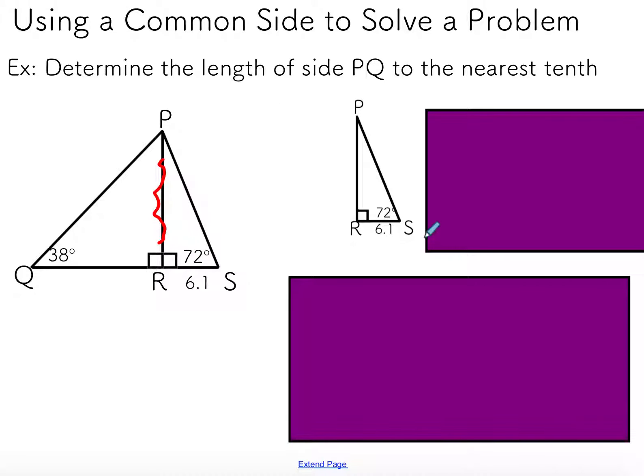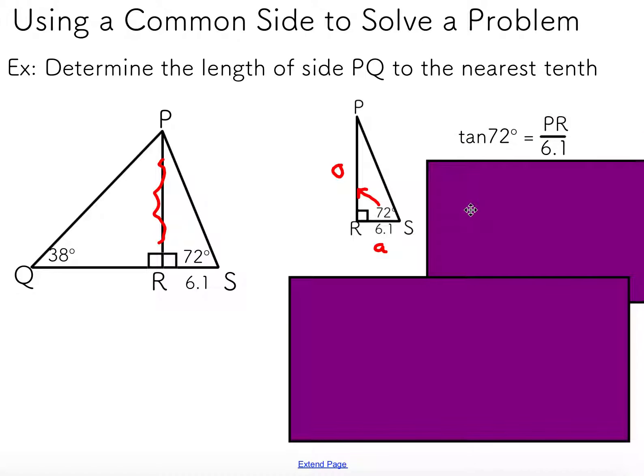If I take a look at that angle, I'm interested in the opposite side. That's my shared side. And I have what's called the adjacent side, the side next to my angle. I don't have my hypotenuse, but it's not really important for this problem. What I have here is the opposite and the adjacent. I want to use the tan ratio. I can write this as PR over 6.1, the opposite side over the adjacent side with respect to that 72 degree angle.